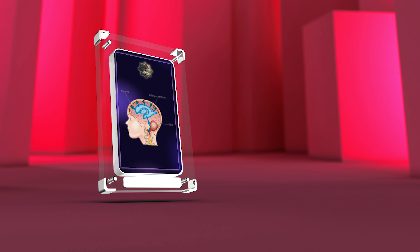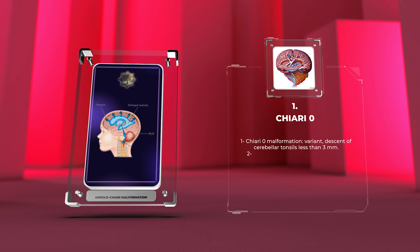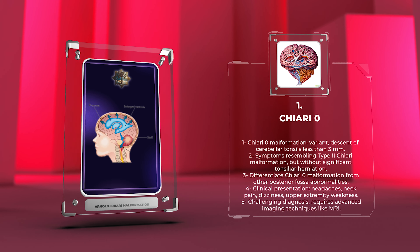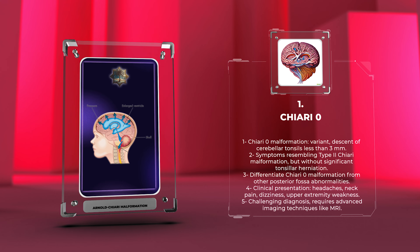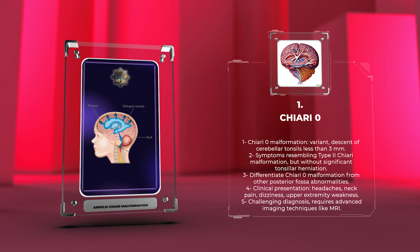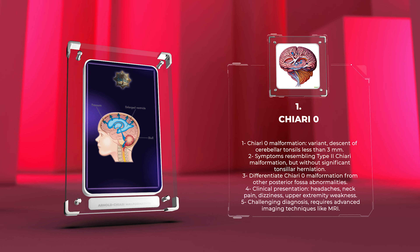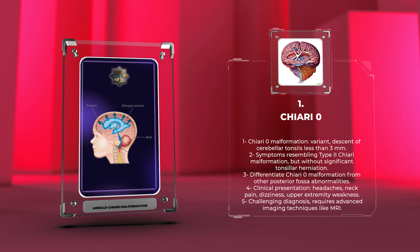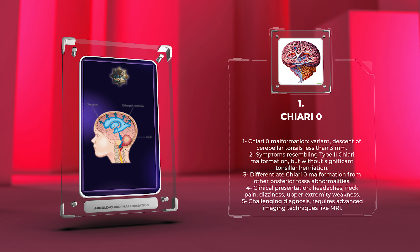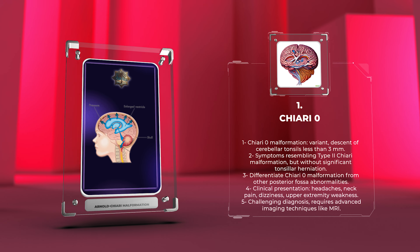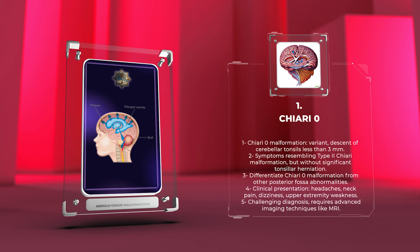Chiari Zero Malformation is a subtle variant of Chiari Malformation where the descent of the cerebellar tonsils is less than 3 mm. This condition is often associated with symptoms resembling those of type 2 Chiari Malformation but without significant tonsillar herniation. The clinical presentation may include headaches, neck pain, dizziness, and upper extremity weakness.